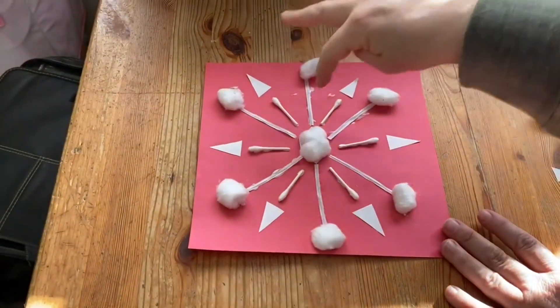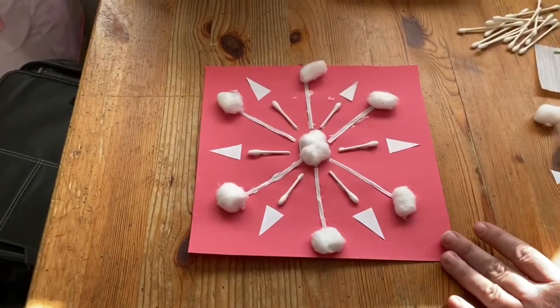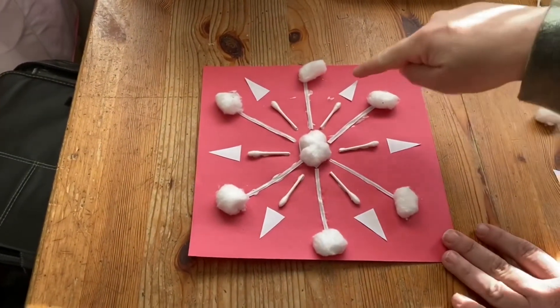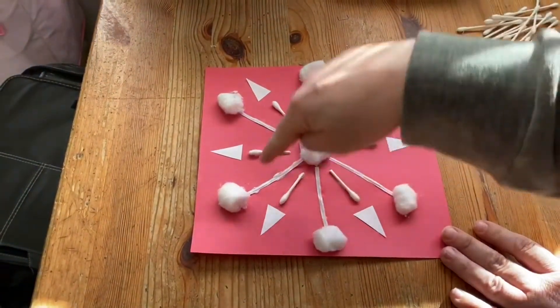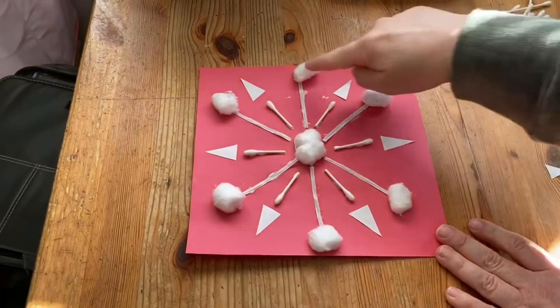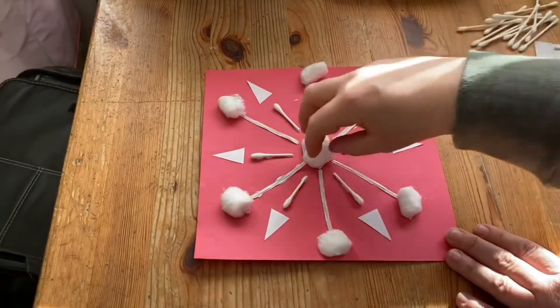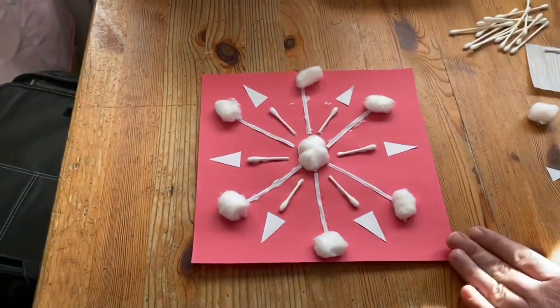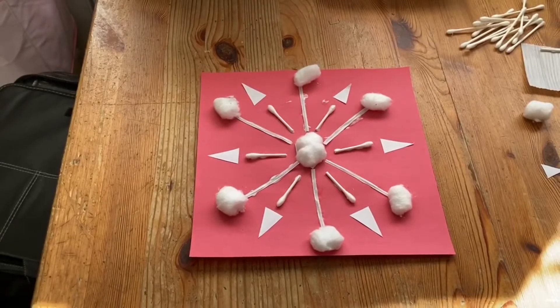You see there are one, two, three, four, five, six sides. And we have six lines, six q-tips, six cotton balls, six triangles, and then of course the middle part. So I'm going to glue those down and then we will be finished.